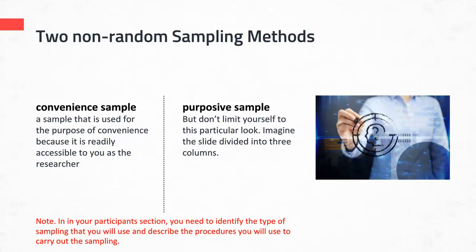The main non-random sampling that a quantitative researcher uses is convenient sampling — where the researcher samples a group of participants that are accessible or convenient to them. For example, Samantha uses online graduate students from the university where she's employed because those individuals are accessible to her. A convenient sample can also be a sample of volunteers, who are considered a convenient sample.